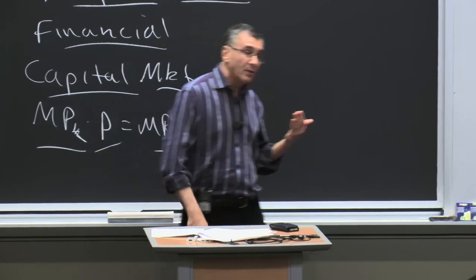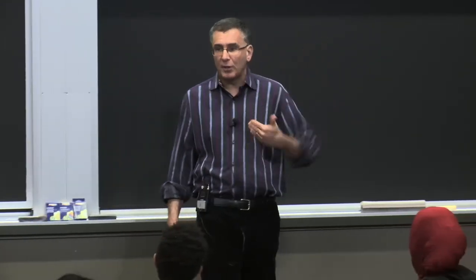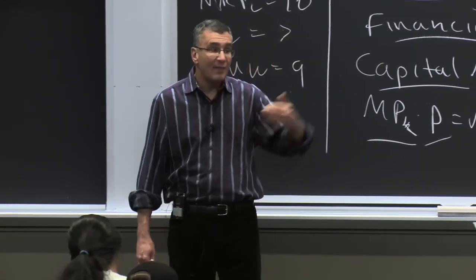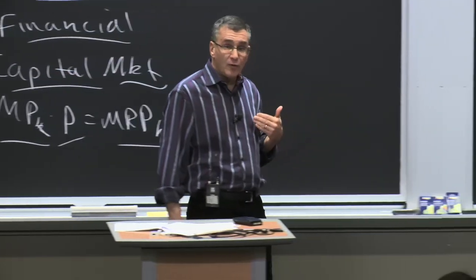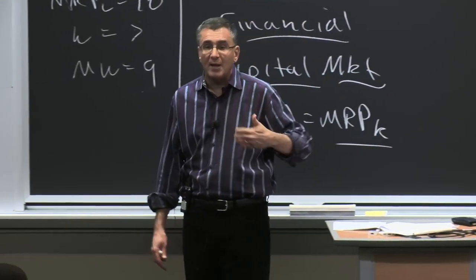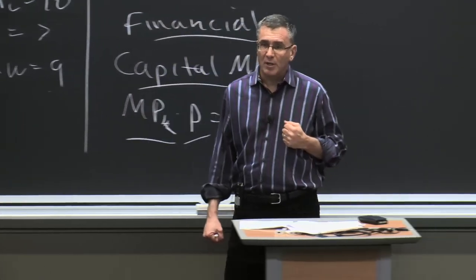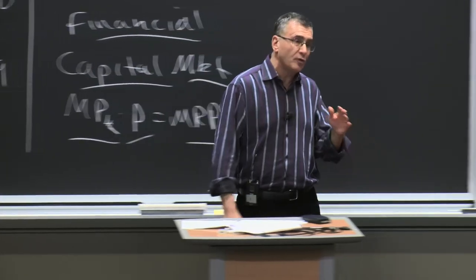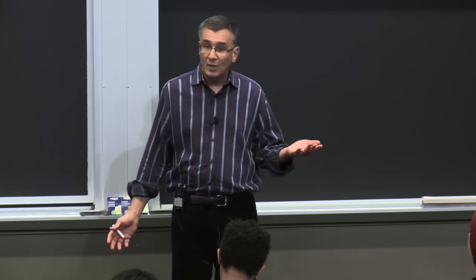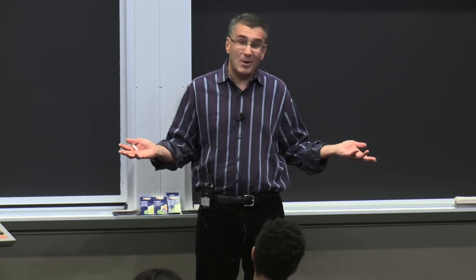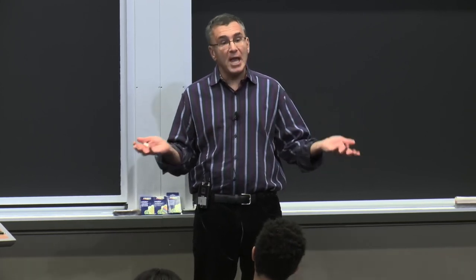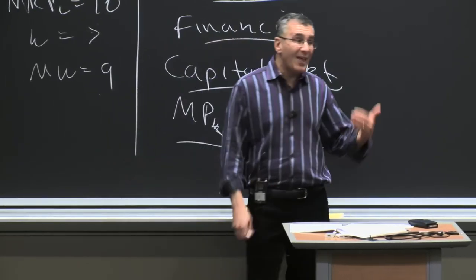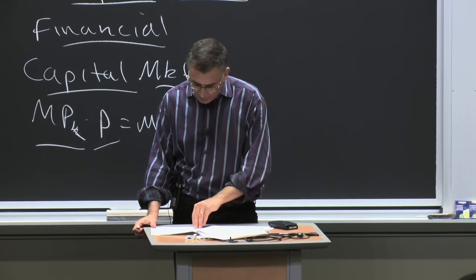As the interest rate is higher, I have to pay people back more to borrow their money. At 10%, if I borrow $1 from you, I pay you back $1.10 next period; at 20%, I pay back $1.20. The reason the supply curve is upward sloping is: the more you're willing to pay me for my money, the more I'm willing to lend you. If you say 'give me $1 and next year I'll give you back $1.10,' I'm interested. $1.20 — very interested. $1.50 — for sure. So the higher the interest rate, the more I'm willing to loan to the firm, yielding an upward-sloping supply curve.